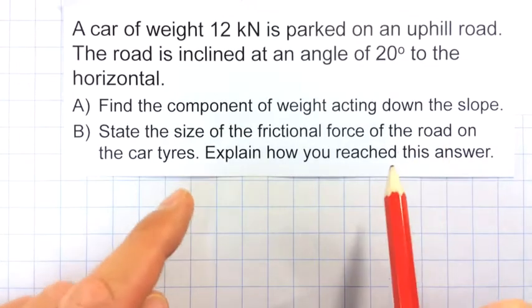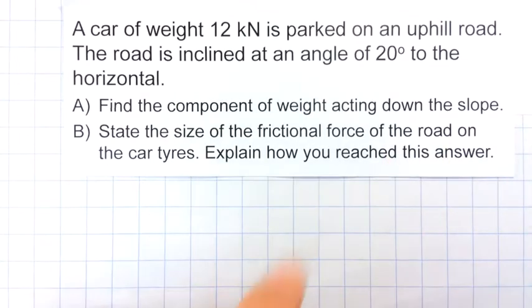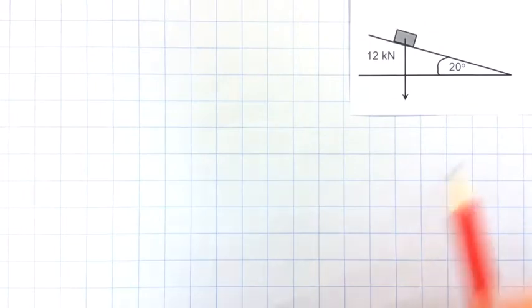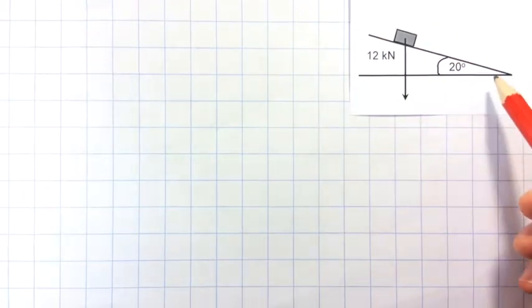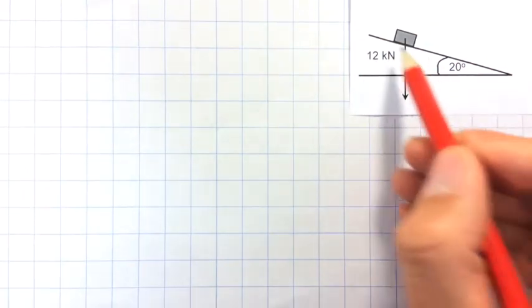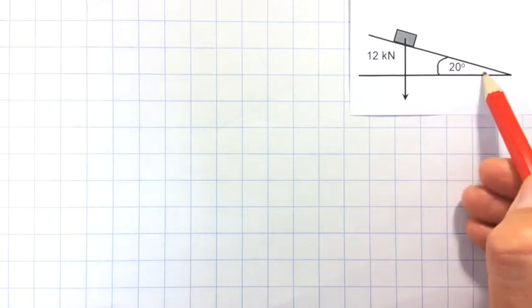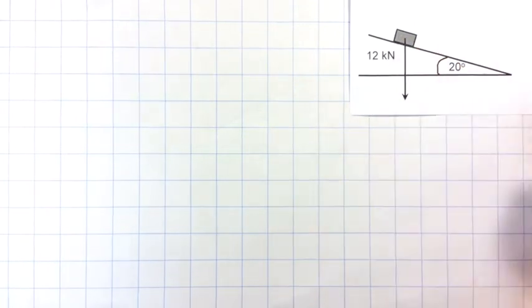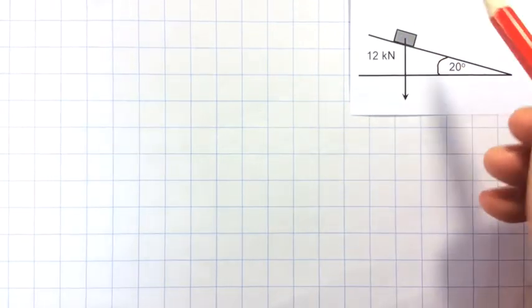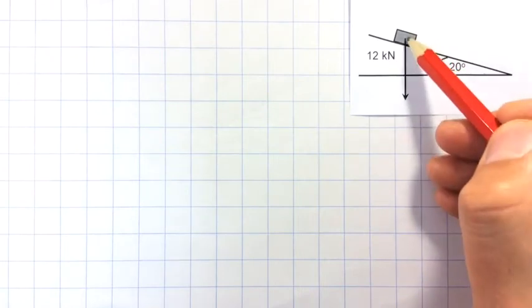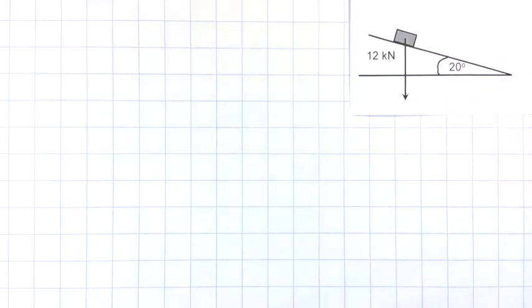To give a bit of space to work, I'm going to move this out of the way. And I've pre-drawn a little sketch up here showing the situation. We've got a slope at 20 degrees to the horizontal, and we've got a car, which I've just drawn as a rectangle. And I've drawn the 12 kN weight acting from the centre of mass of the car.